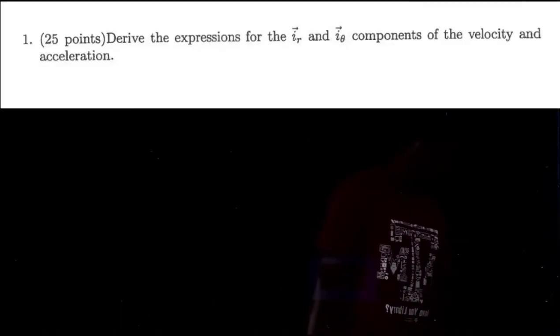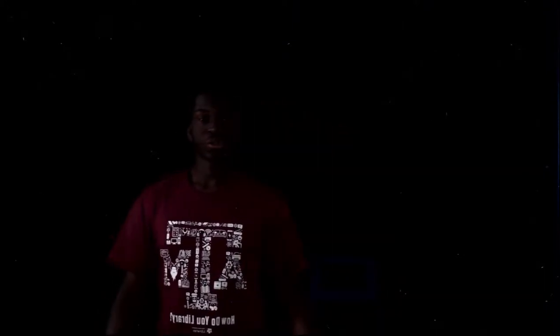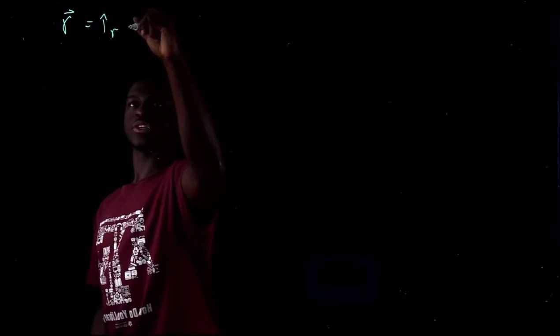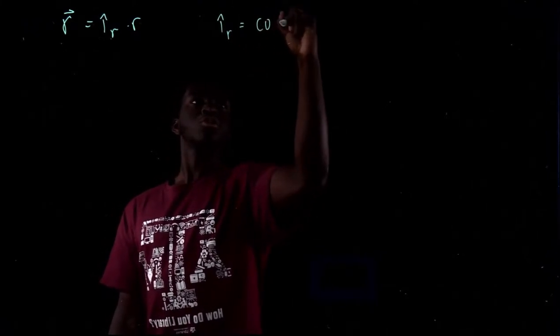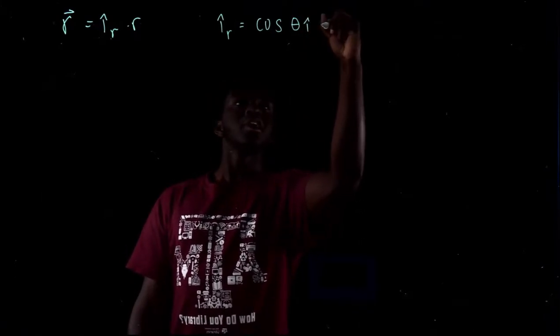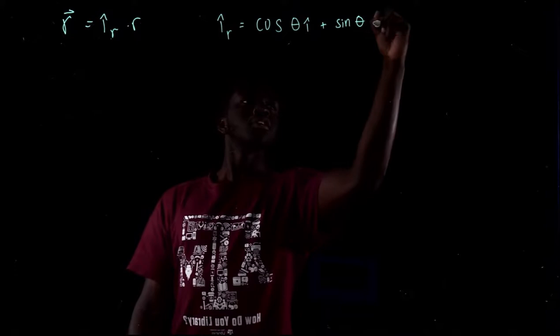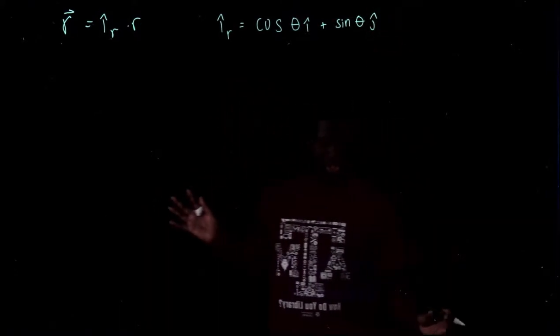Let's get straight into it. Number one asks you to derive expressions for the ir and iθ components of velocity and acceleration. I'm going to work it out the way my teacher taught me — the way I did it on the test and got full points. The first thing you write is the r vector: r-vector equals ir times r. Then you memorize that ir equals cosine θ î plus sine θ ĵ.